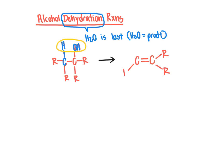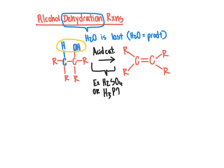This reaction is catalyzed by an acid. The acids commonly used are sulfuric acid (H2SO4) or phosphoric acid (H3PO4). Sometimes it's just written as 'acid catalyst' above the reaction arrow, indicating a source of protons is available. This can also be written as H+ or H3O+. The idea is that an acid is present as a catalyst.